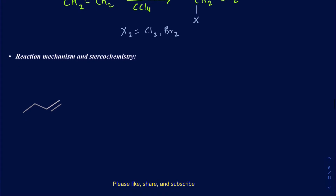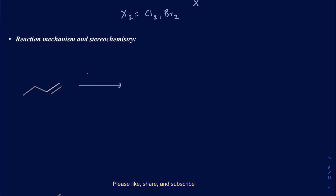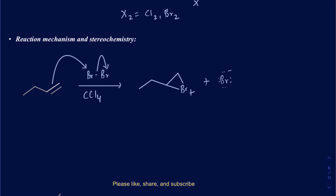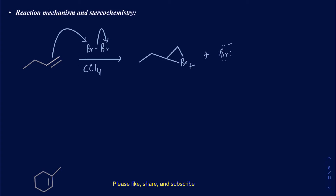Let's look at a mechanism to understand the stereochemistry a little bit more. Suppose I'm using Br2 in the presence of carbon tetrachloride. The first step is the nucleophilic attack onto the electrophile — one of those bromines acts as an electrophile, the bond between the bromines breaks, and the lone pair goes onto the second bromine. In the first step, you make a halonium ion where both carbons are bonded with the bromine, giving a positive charge. This intermediate is called the bromonium ion.